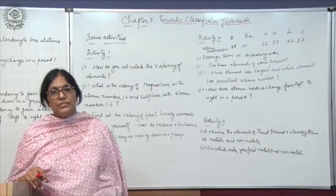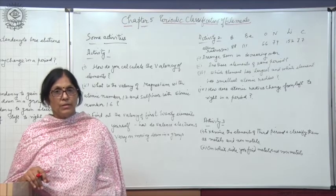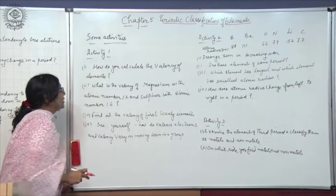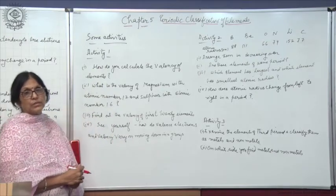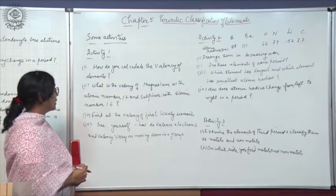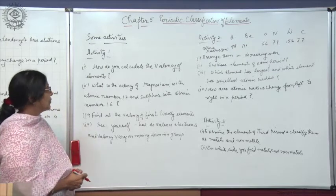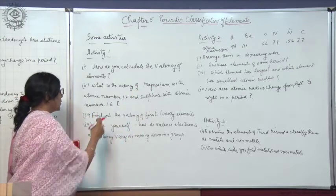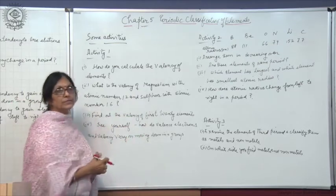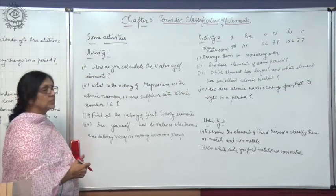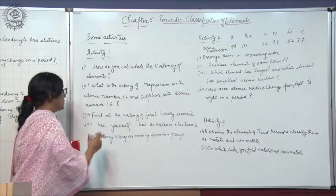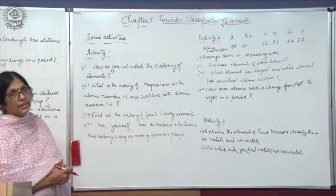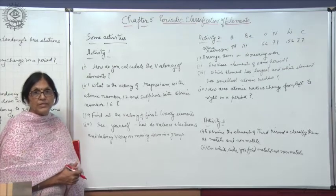Now let us see some activities to understand the periodic table better. Activity 1: how do you calculate the valency of elements? Recall what we discussed — how to calculate valency from valency electrons using different criteria for metals and non-metals. What is the valency of magnesium and sulphur? Magnesium has atomic number 12, electronic configuration 2,8,2, so valency is 2.